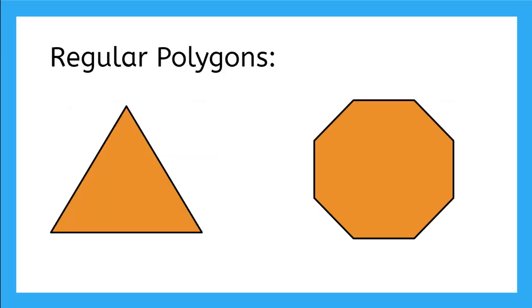The equilateral triangle is a regular polygon. All three sides are the same length, and all three angles are 60 degrees. This octagon is also a regular polygon. All eight sides are the same length, and the eight angles are all 135 degrees.